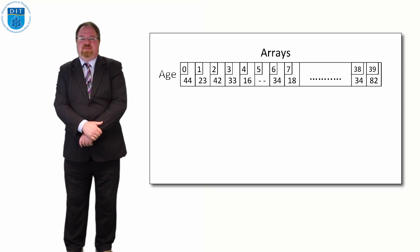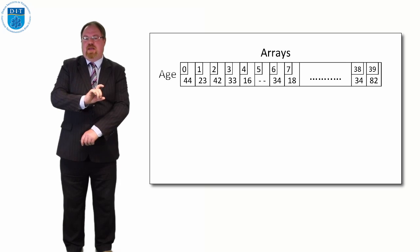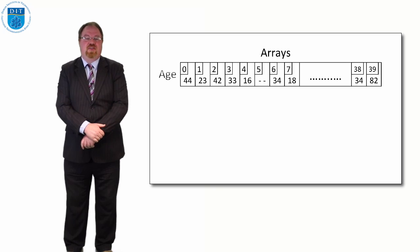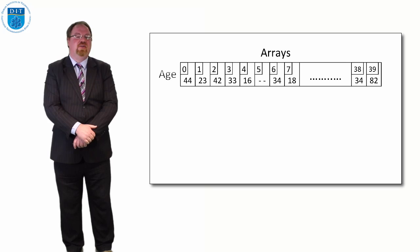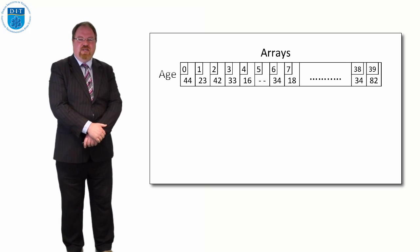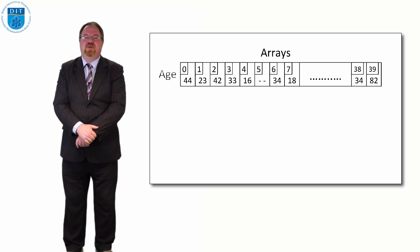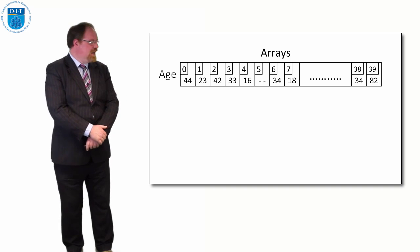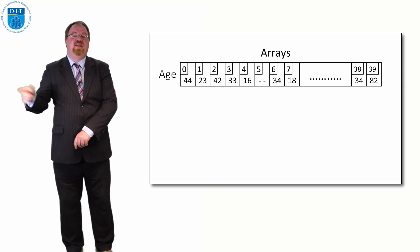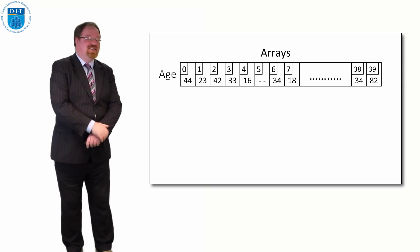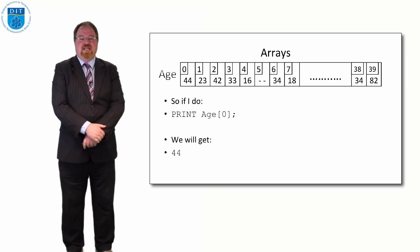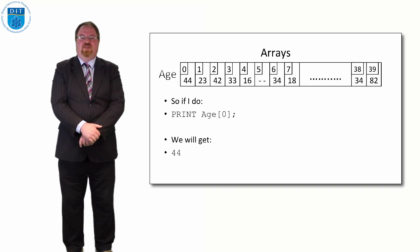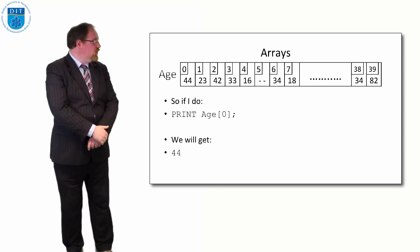Let's look at the array with values in it — the numbers are the addresses of the elements, but the values are something else. The first student, age[0], is 44; the second student, age[1], is 23; the third student, age[2], is 42; and so on. If I print out the value at address 0 I get 44, and printing element 2 gives 42.